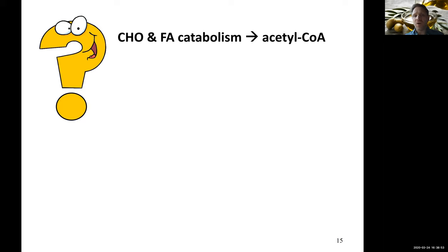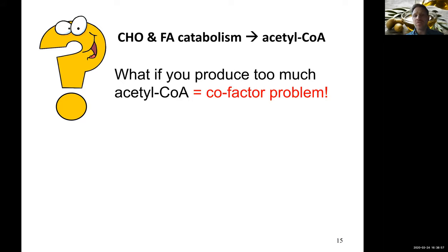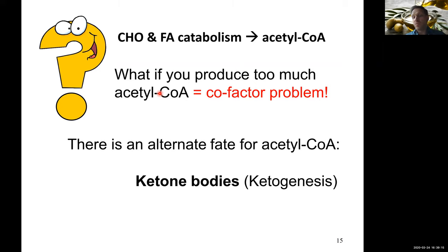Thinking about all these catabolic pathways funneling into acetyl-CoA, you could imagine a scenario where you're making too much. What if we produce too much acetyl-CoA? Keep in mind, you have your cofactor CoA bound in the acetyl moiety. So if you make too much, you could feasibly run into a cofactor problem. We want a fail-safe mechanism—an alternate way to deal with acetyl-CoA. And for us, these are ketone bodies: ketogenesis.